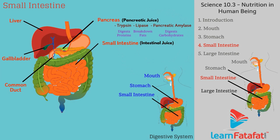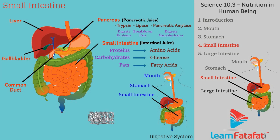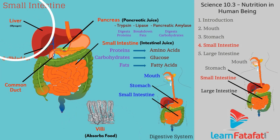The wall of the intestine also secretes intestinal juice, which converts proteins into amino acids, complex carbohydrates to glucose, and fats into fatty acids. The walls of the small intestine have a large number of finger-like projections called villi. Villi absorb the digested food, which is then carried to other parts of the body by blood. Unused glucose is stored as glycogen in the liver.